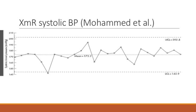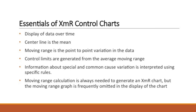The essentials of the XMR control chart are: a display of data over time, the center line is the mean, the moving range captures the point-to-point variation in the data, the control limits are generated from the average moving range, and information about special and common cause variation is interpreted using the specific rules we reviewed. The moving range calculation is always needed to generate an XMR chart, but the moving range graph is frequently omitted in the display of the chart.